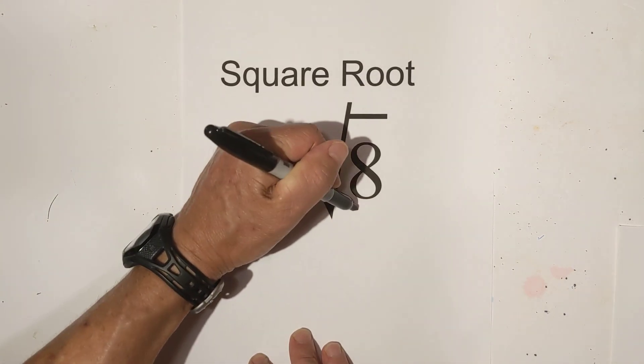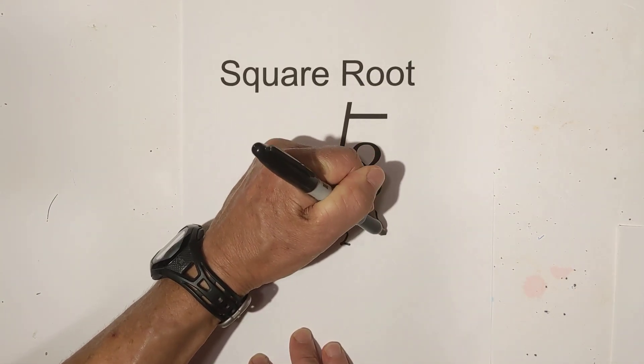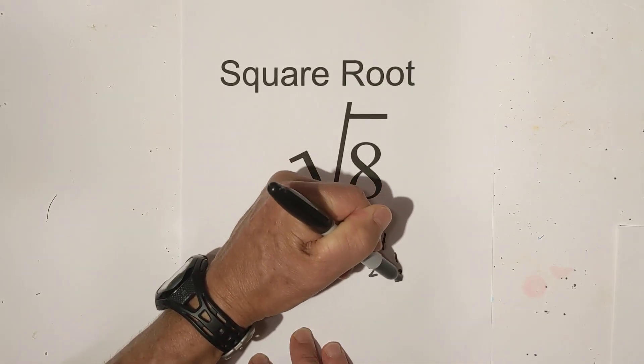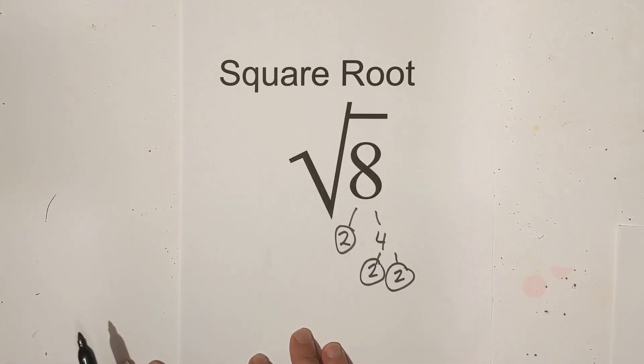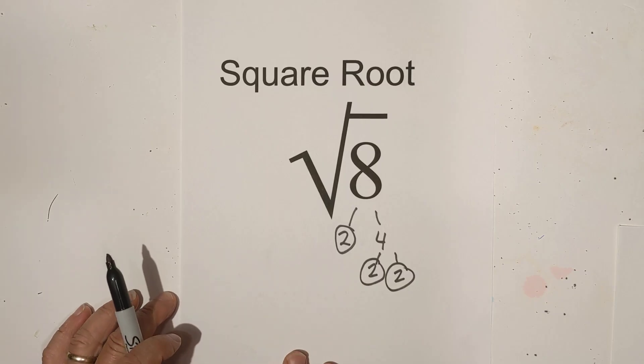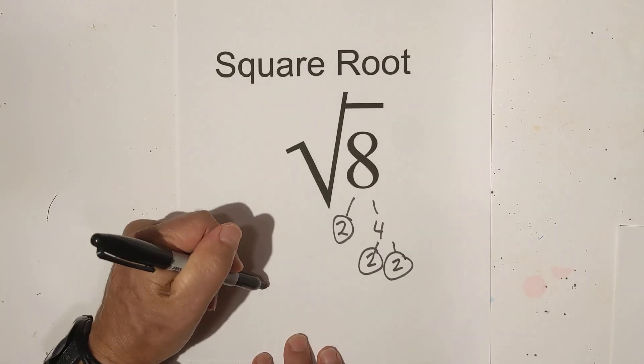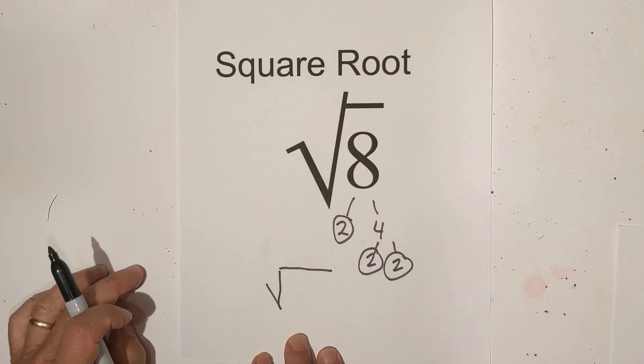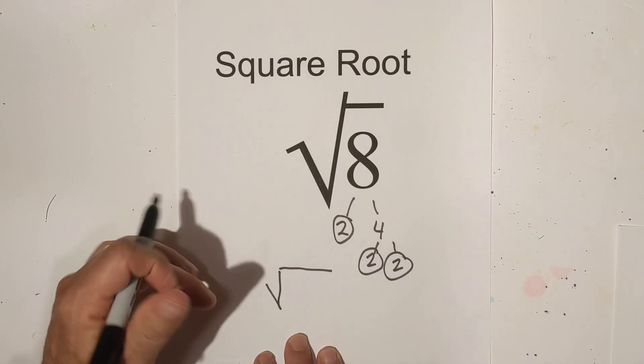So the first thing I'm going to do is complete a factor tree. 2 times 4, circle the 2 because it is prime, and then 2 times 2. And so now I'm down to prime numbers, so I can rewrite these. You don't really have to do this, but I'm just showing you under the square root sign how to do this.